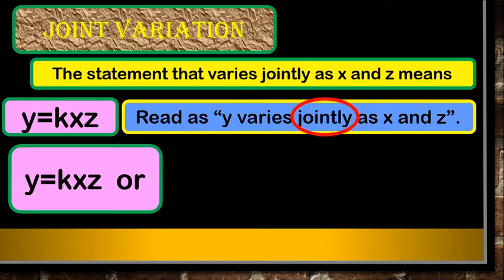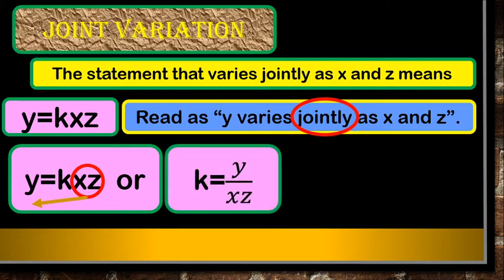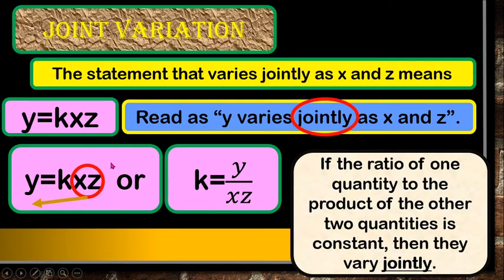So y equals k times x times z. You can solve for the constant of variation by cross-multiplying xz to the other side: k equals y over xz. Remember, if the ratio of one quantity to the product of the other two quantities is constant, then they vary jointly.